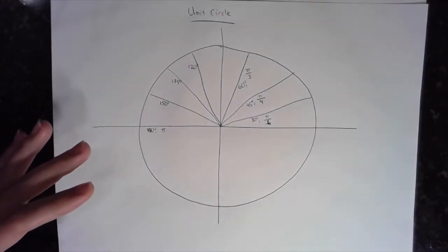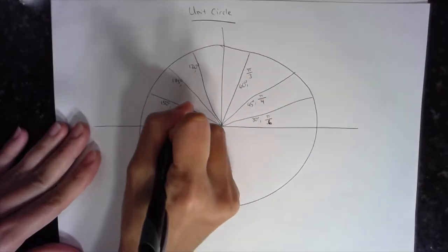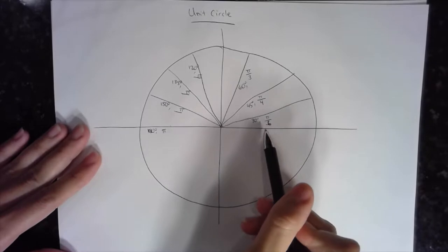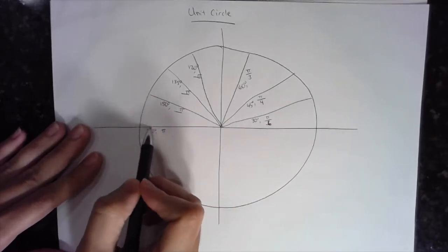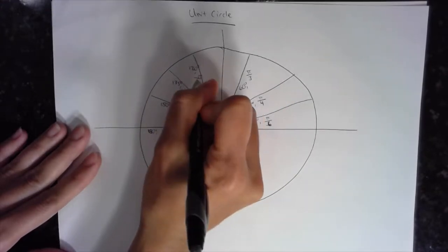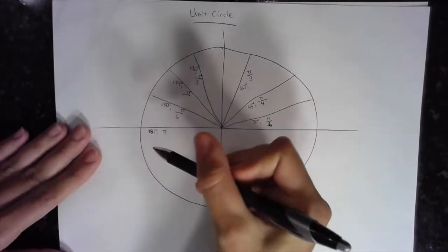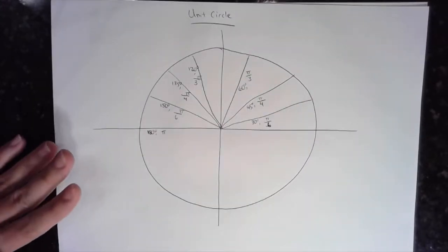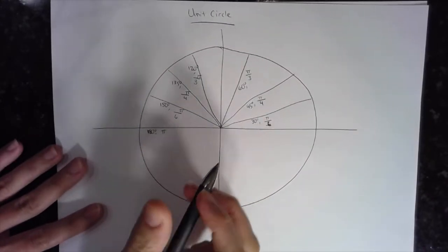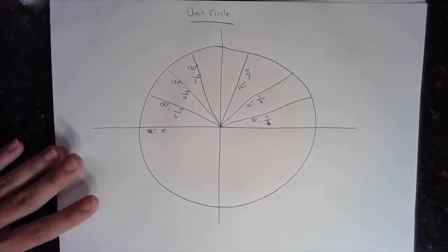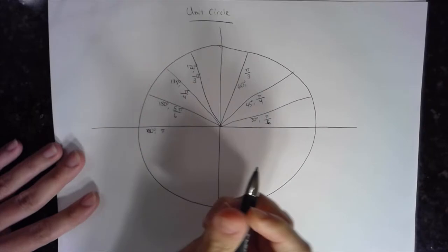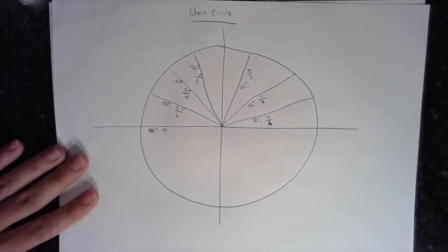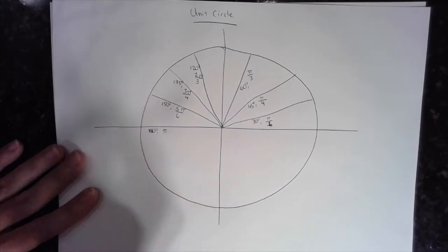For quadrant two radians, we always have a π in our fraction. The angle 30° away from 180° keeps a denominator of 6, giving 5π/6 — where 5 is one less than 6. The next angle is 3π/4 — three is one less than four. The angle furthest from the horizontal has a denominator of 3, giving 2π/3 — two is one less than three.